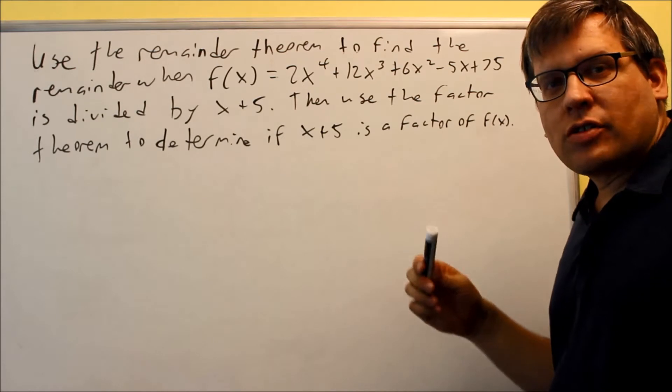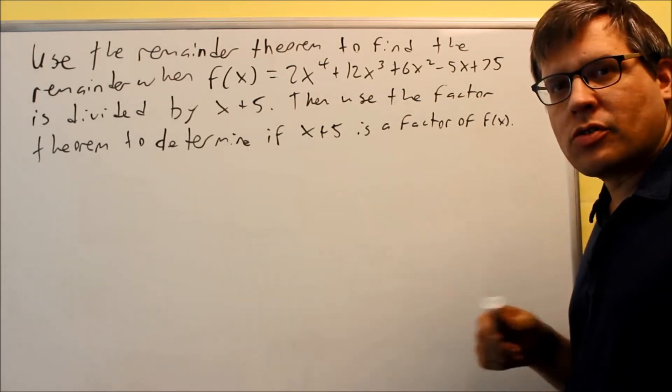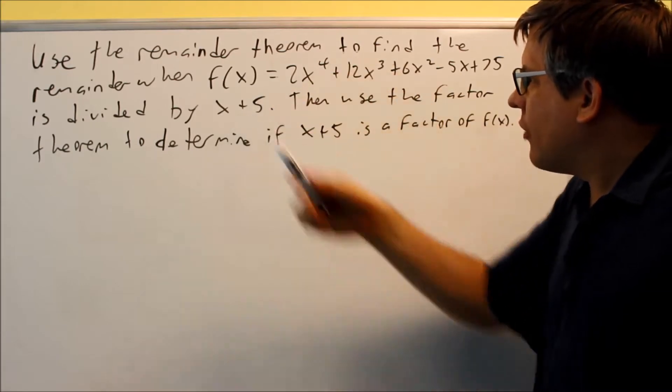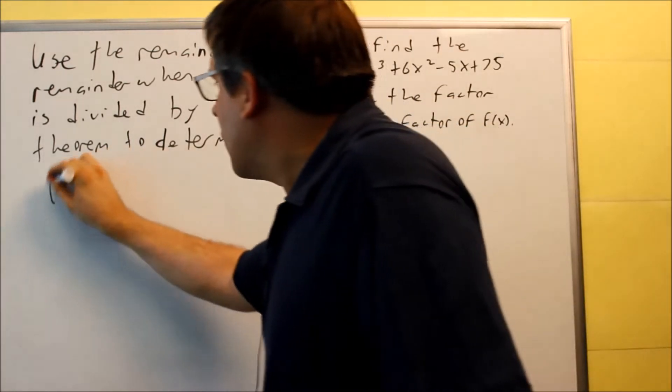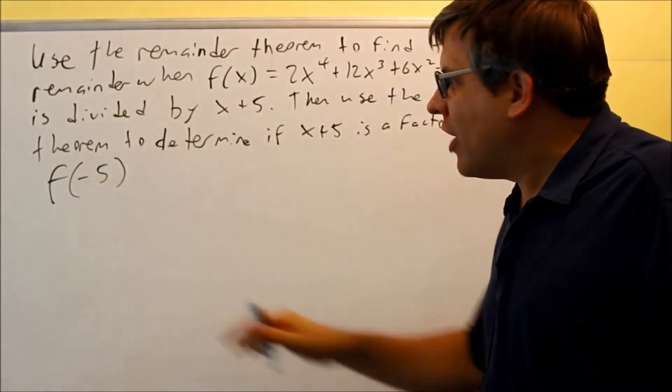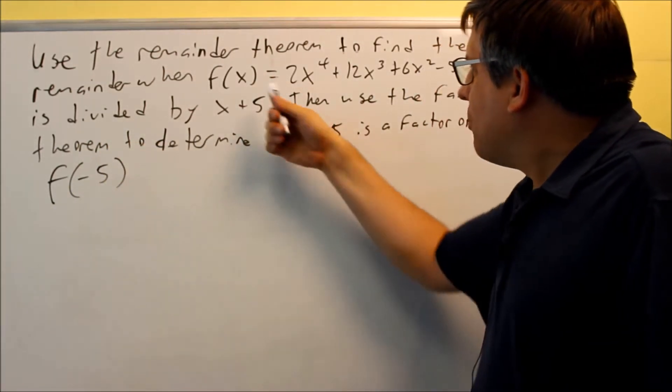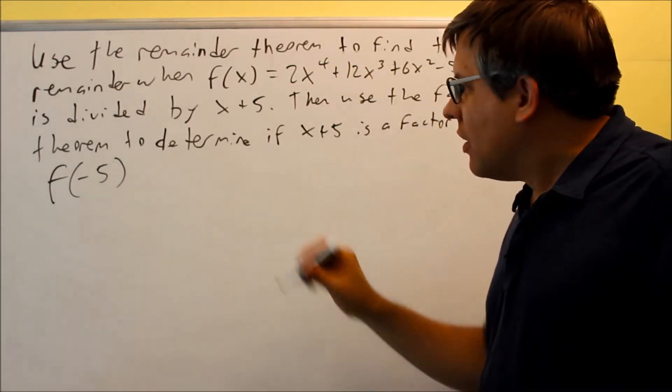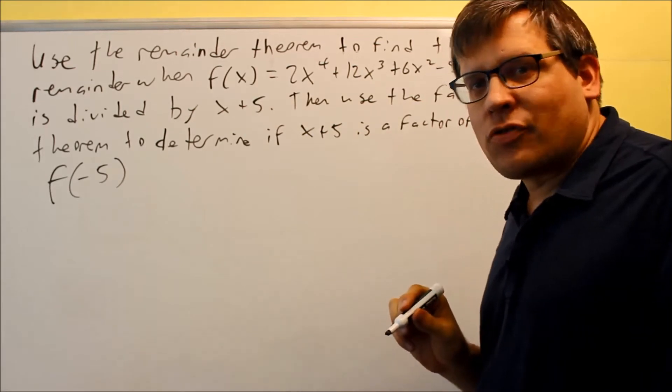So in the last video, I talked about what the remainder theorem is. The remainder theorem means that whatever I divide this, if I'm dividing this, that means I'm actually going to find out what the value of f of negative 5 is. If I find f of negative 5 and put negative 5 into all this, that should be the same exact answer as if I do synthetic division with the plus 5.